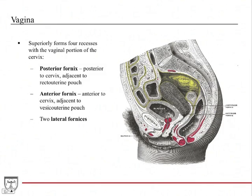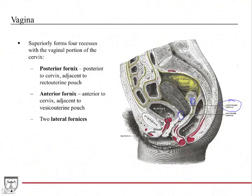When the vagina connects with the cervix, it forms four recesses superiorly. First, the posterior fornix, which is adjacent to the recto-uterine pouch (pouch of Douglas). Then the anterior fornix, which is adjacent to the vesicouterine pouch — that fold of peritoneum creating that pouch. There are also two lateral fornices. The two most clinically significant are the posterior and anterior, because they're adjacent to the two pouches formed by the peritoneum.